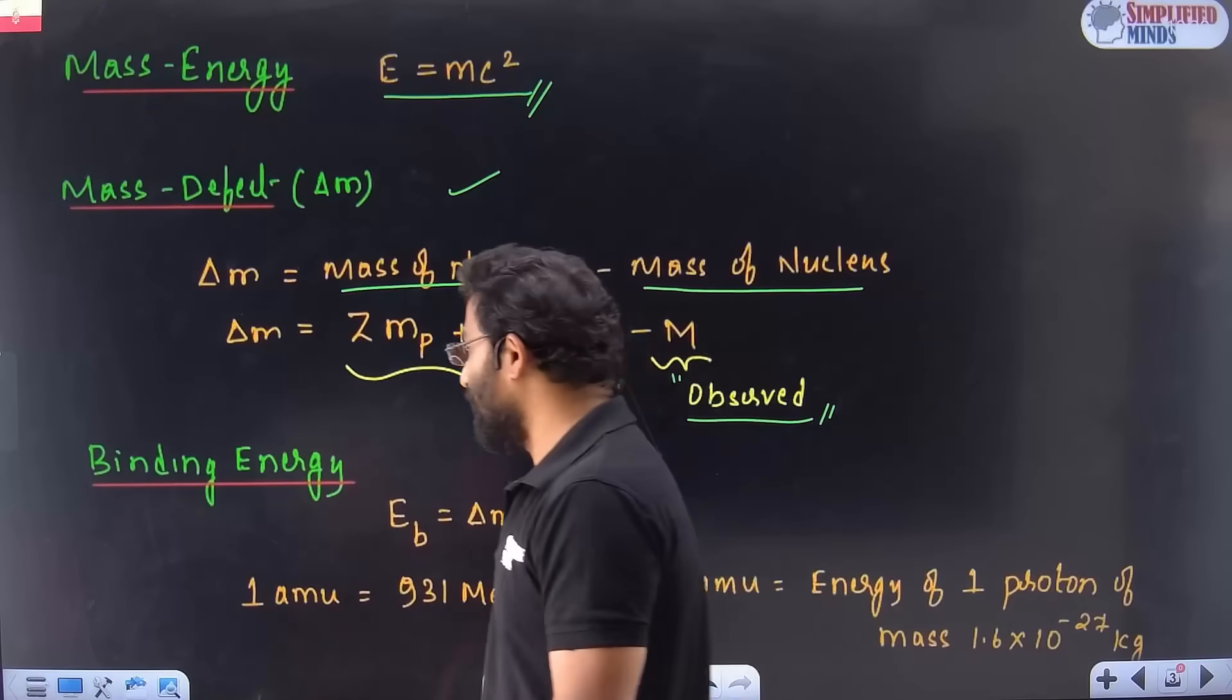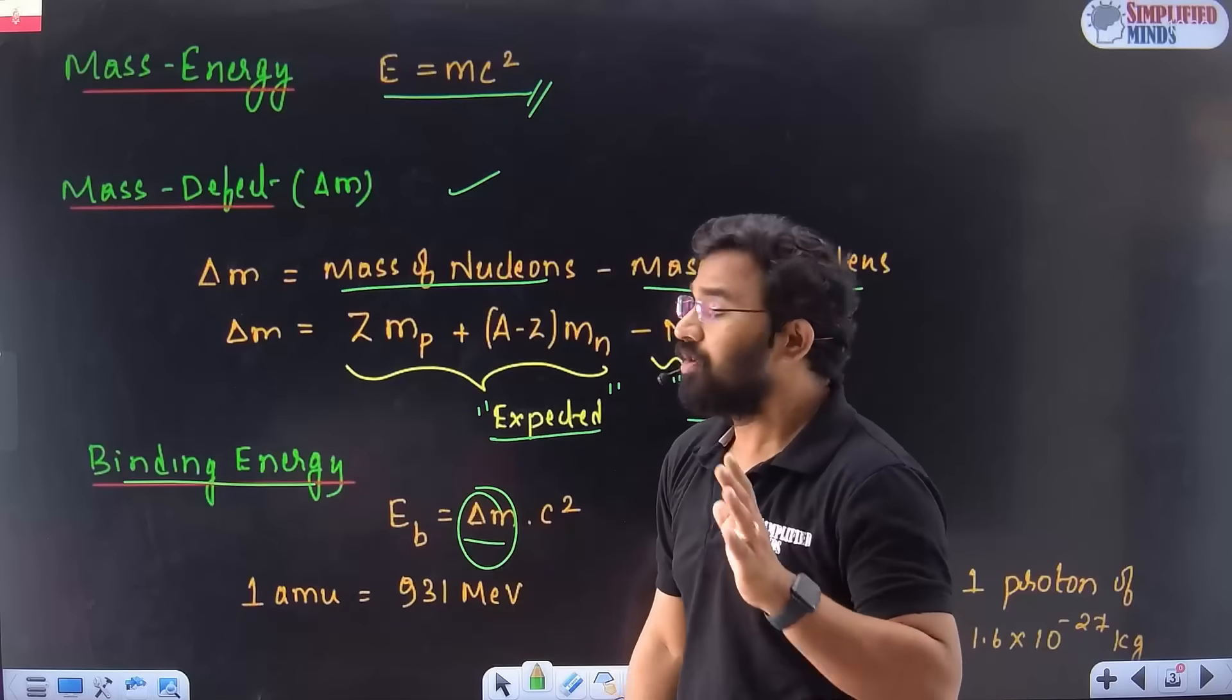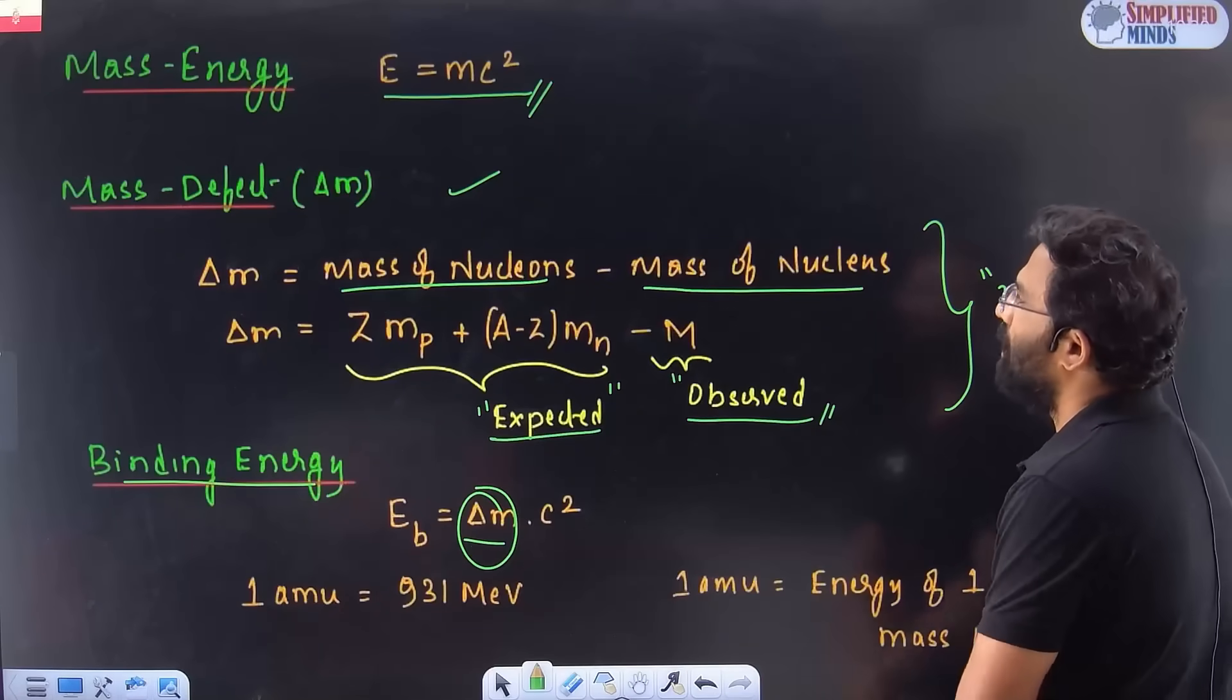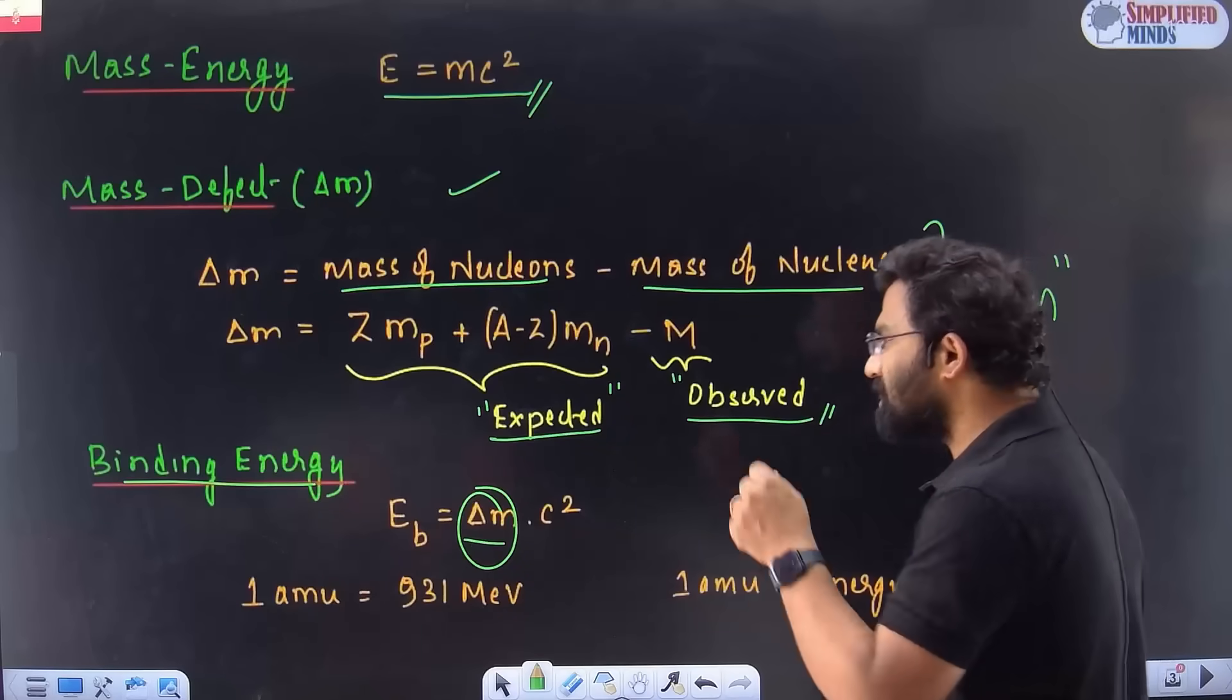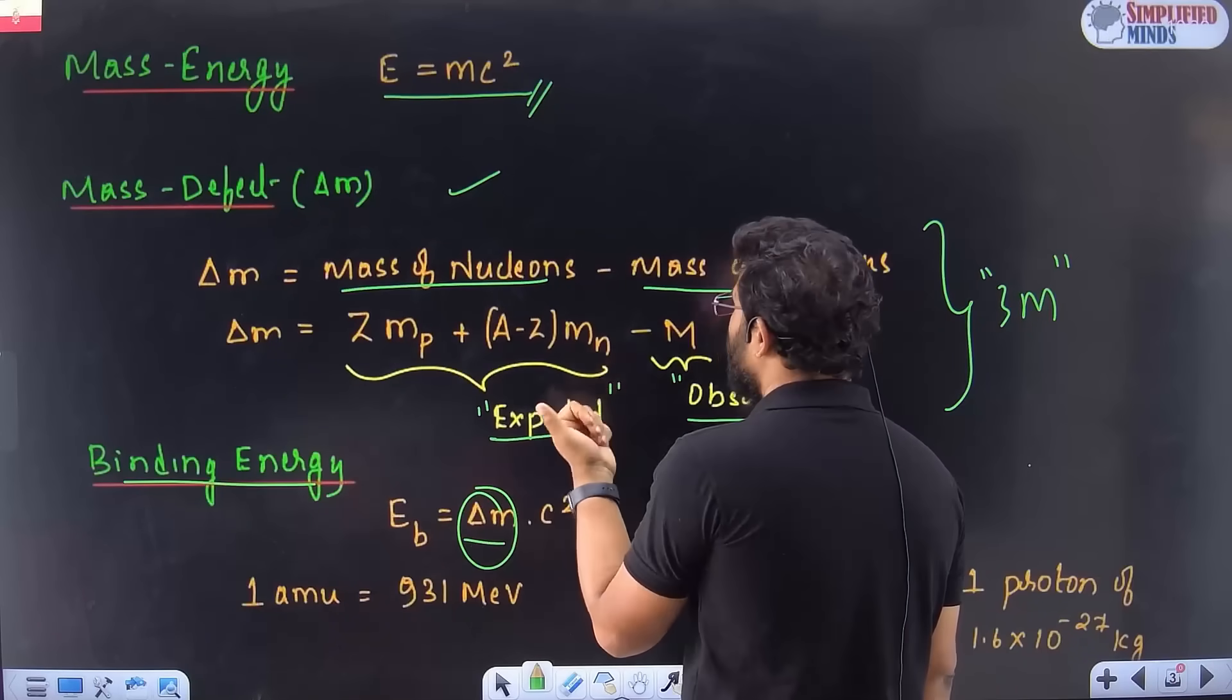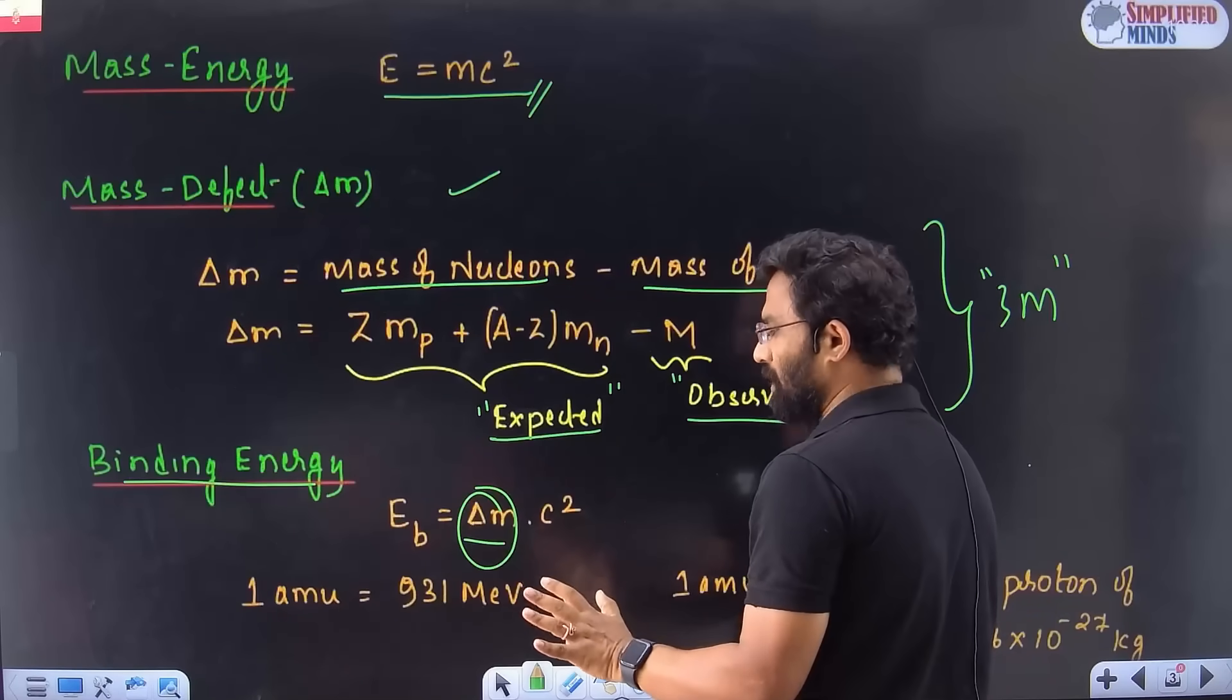So therefore, the binding energy is given by Eb is equal to delta M. We have same formula, M place only, delta M. Eb is equal to delta M into C square. Simple formula. So they will ask simply numericals based on this. It's only three markers. I will take immediately after this video a numerical session. And then we will discuss all types of numericals from this chapter. Usual three mark question. You just have to find individually, they will give mass of proton, mass of neutron. They will give atomic mass also. You just have to find Z into A minus Z.